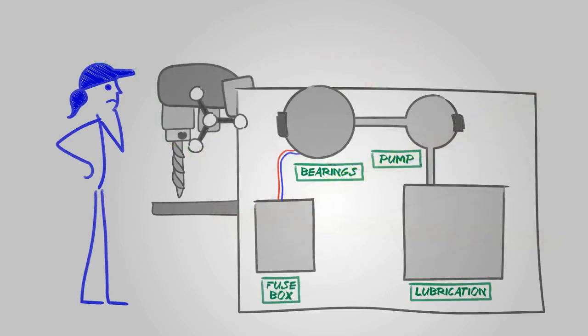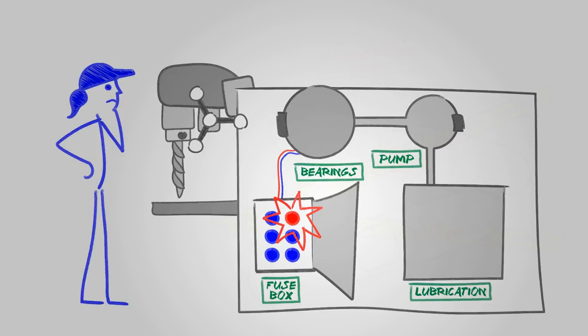In this example, he looked at a machine that had stopped working and identified with the first why that it had blown a fuse in the control box because it was overloaded. The overload caused the fuse to blow.